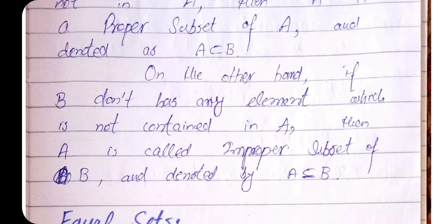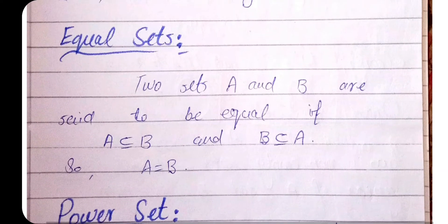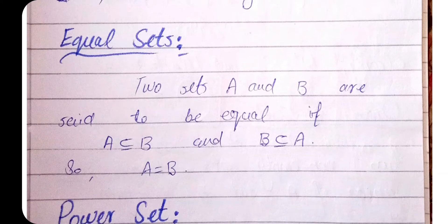For improper subsets, we use the notation A ⊆ B with an equality sign, which means A is a subset of or equal to B — representing that A and B may be equal. Every set is its own subset. Two sets A and B are said to be equal if A is contained in B and B is contained in A, meaning all elements of A are in B and all elements of B are in A.